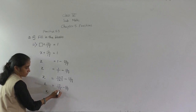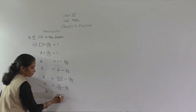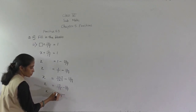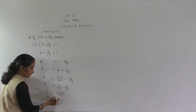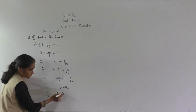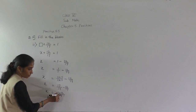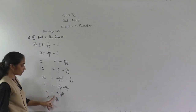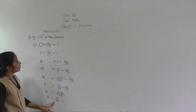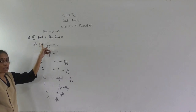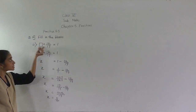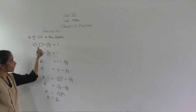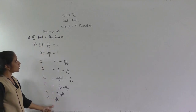Now the denominators are the same, so subtract the numerators. 17 minus 12 is 5. So x is equal to 5 upon 17. In the place of the blank box, we considered x, and we got the value of the blank box: 5 upon 17.